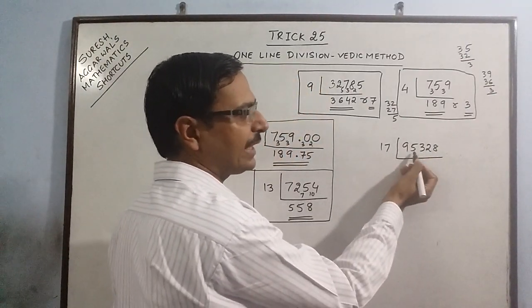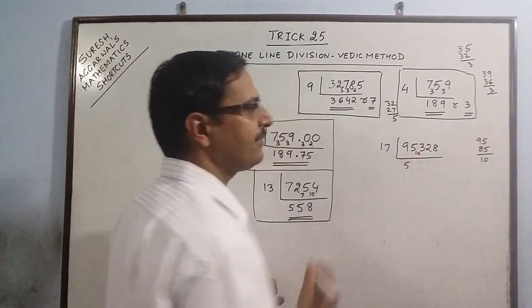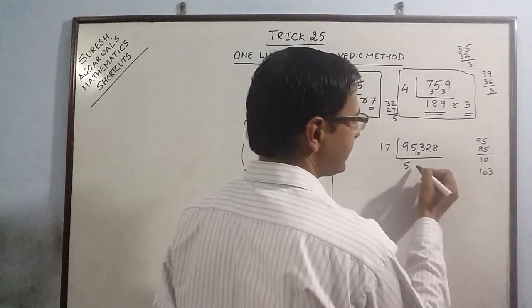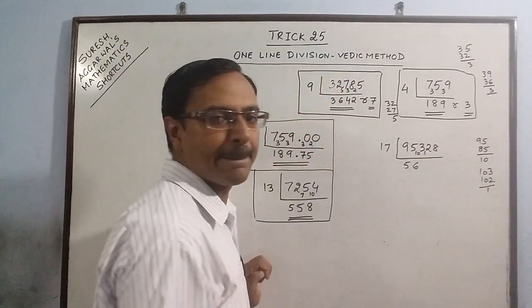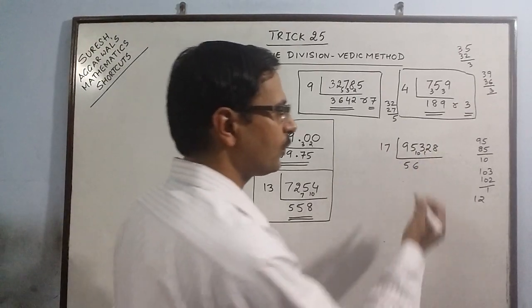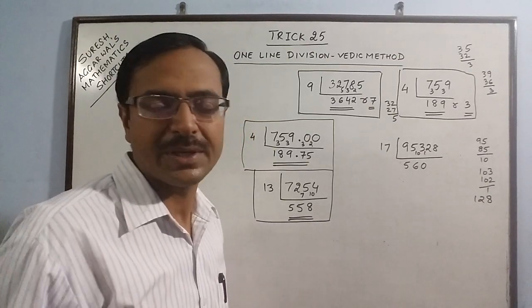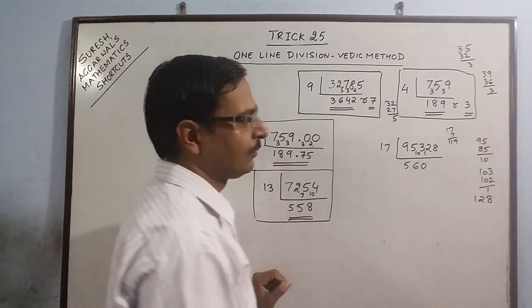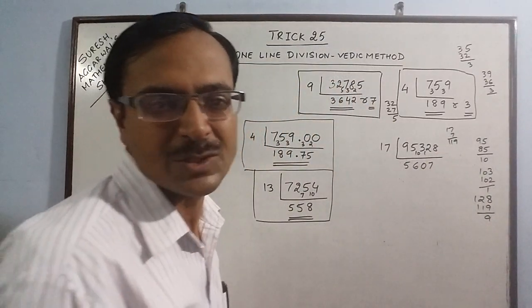17 into 9 is obviously smaller than 17, so we have to take 95. So 17 fives are 85, we are left behind with 10. 10 we write between 95 and 3. So this becomes 103 now. 103: 17 six times is 102, so we are left behind with 1 which we write between 3 and 2 here. So we have now 12. Now this 12 is smaller than 17 and we have already taken 1 digit from here. So we need to put 1 zero, so we need to put 1 zero and carry forward the remaining digit 8 also. So now carry on the division as usual. So we have 17 into 7 which is 119, closer to 128. So sevens are 119, so we are left behind with 9.